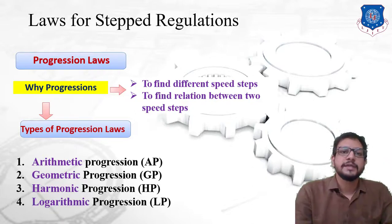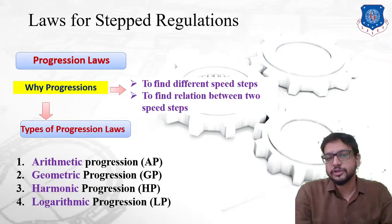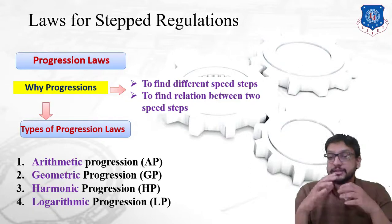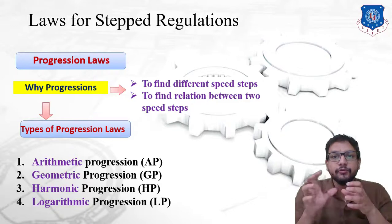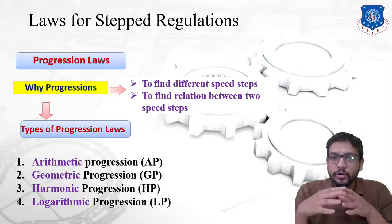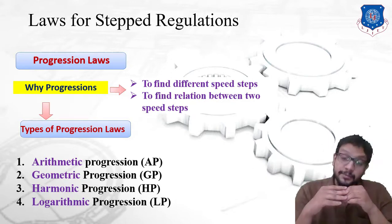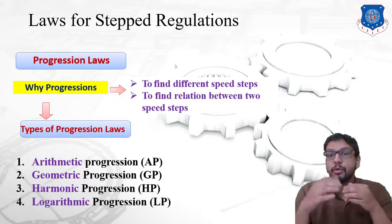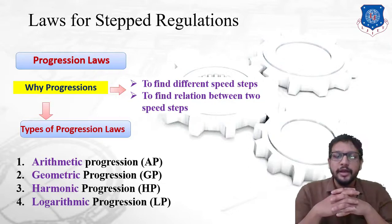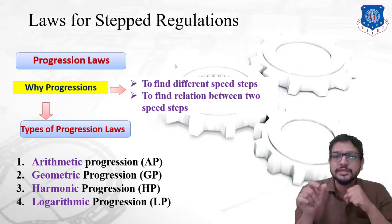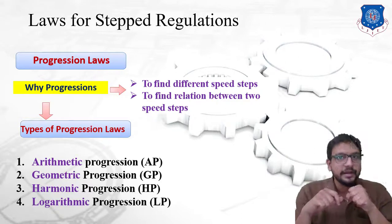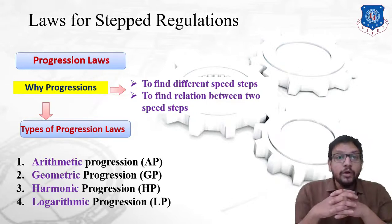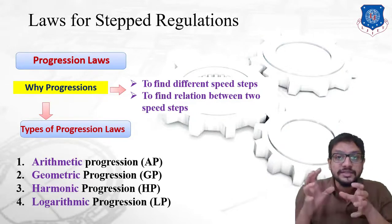The first question is: why do we need to use a progression law? The answer is to find different speed steps. Speed steps means the total number of speeds involved in a gearbox — you would have heard about a six speed, eight speed, nine speed, or twelve speed gearbox. In automobiles, the maximum is a six speed gearbox. These laws are going to decide the intermediate speed values.